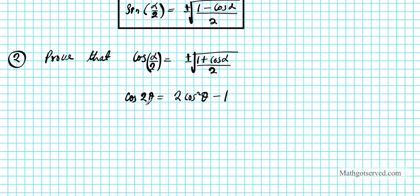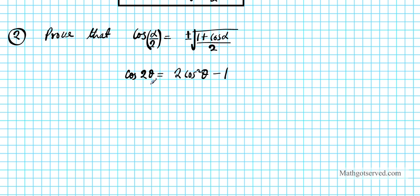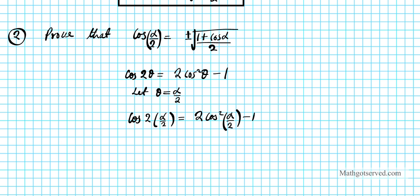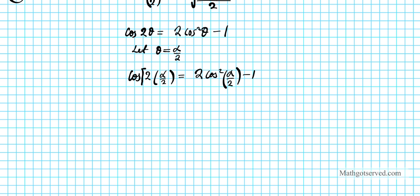If you notice, we are using only the cosine double angle identities to arrive at our derivations. So to do this, we let θ equal alpha over 2, and substitute alpha over 2 for θ on both sides of the equation. That gives us cosine of 2 times alpha over 2 equals 2 cosine squared of alpha over 2 minus 1. On the left side, the 2's divide out, so we have cosine alpha equals 2 cosine squared of alpha over 2 minus 1.